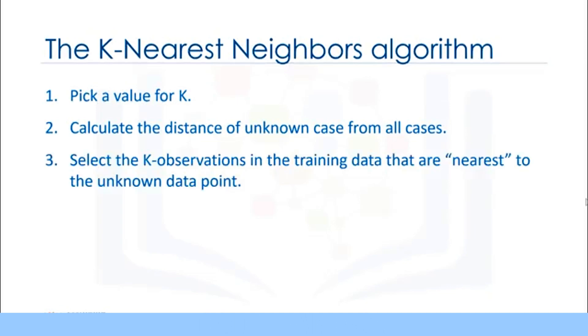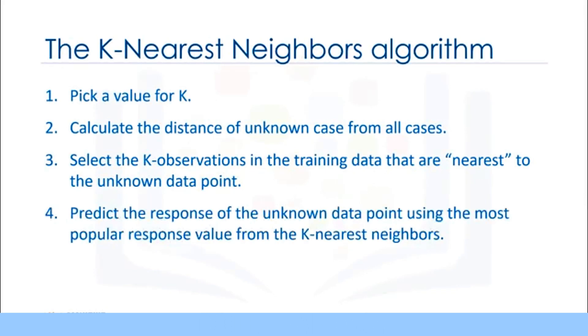3. Search for the k observations in the training data that are nearest to the measurements of the unknown data point. 4. Predict the response of the unknown data point using the most popular response value from the k nearest neighbors.